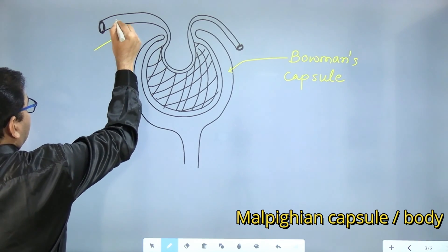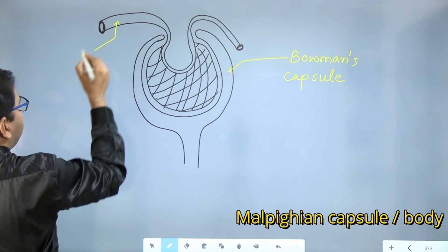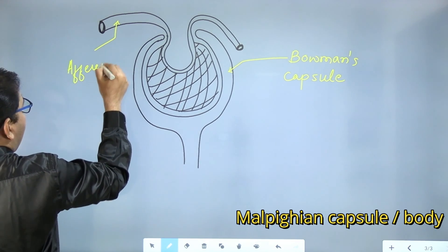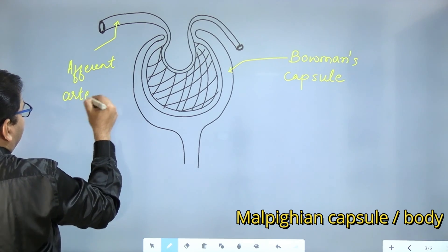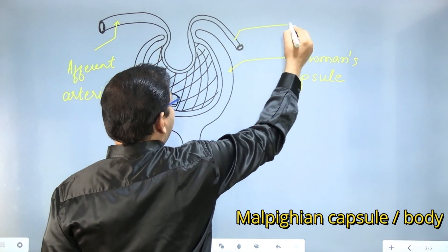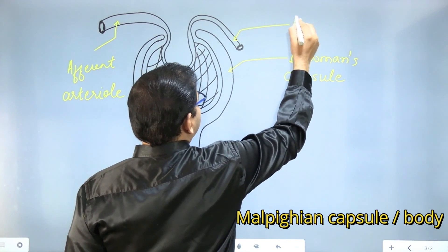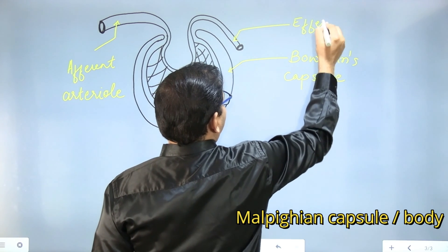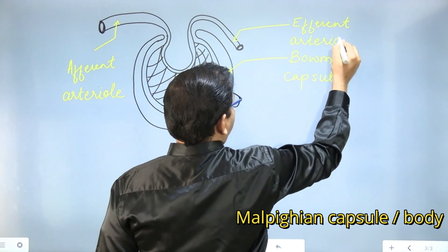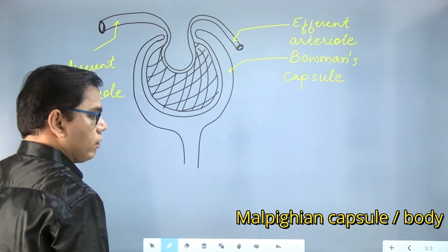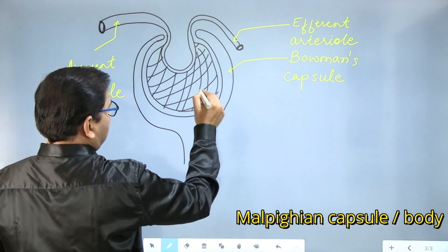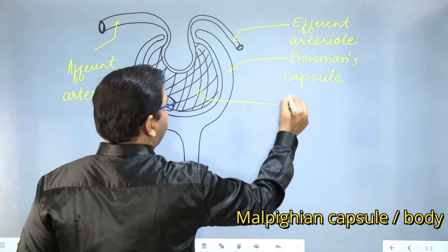After Bowman's capsule, this part or capillary or blood vessel with a bigger diameter is called afferent arteriole, and the other with a smaller diameter is called efferent arteriole. This part is called glomerulus.